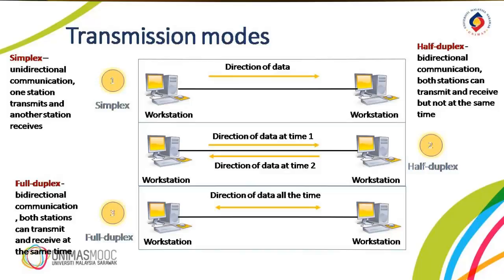When cars are traveling in one direction, cars going the other way must wait. In a half-duplex transmission, the entire capacity of a channel is taken over by whichever of the two devices is transmitting at the time. Walkie-talkies are an example of half-duplex systems.